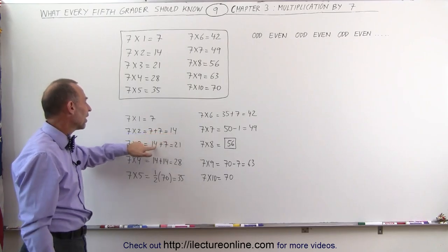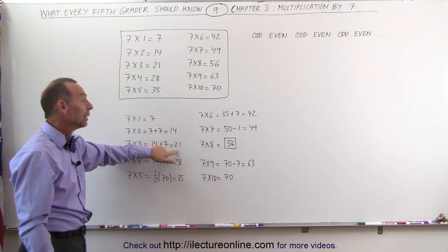7 times 3, we take the previous answer, add another 7 to it, and we get 21.